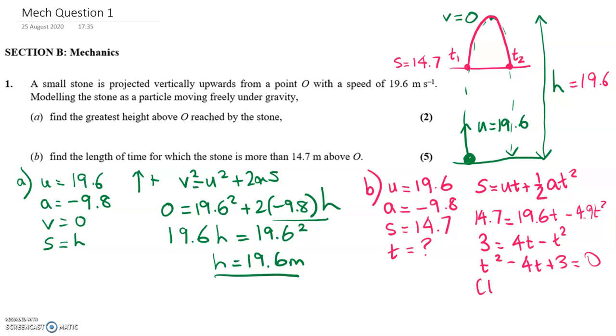This factorises. So we've got one T value, which is 1. That's the one when it's on its way up. And then we've got the second T value of 3, which is the one when it's on its way down.